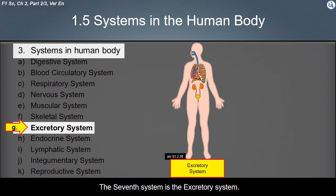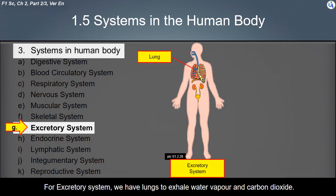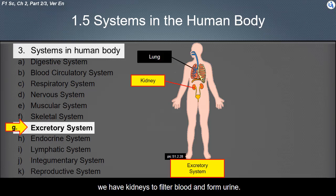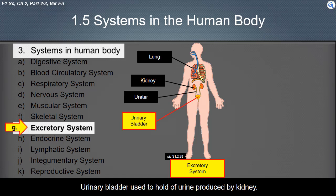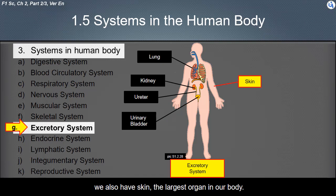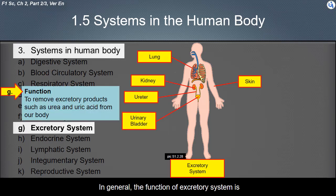The seventh system is the excretory system. We have lungs to exhale water vapor and carbon dioxide, kidneys to filter blood and form urine, the ureter which carries urine from the kidney to the urinary bladder, and the urinary bladder to hold urine produced by the kidneys. We also have skin, the largest organ in our body, to eliminate excess water and salts in sweat. The function of the excretory system is to remove excretory products such as urea and uric acid from our body.